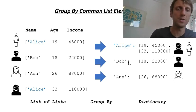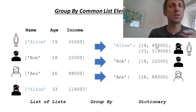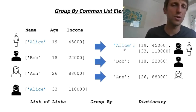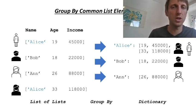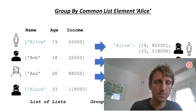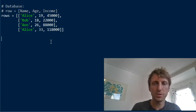This is the group by operation. We group by name Alice. An advanced step would be to aggregate — for example, calculate the average income and average age of persons named Alice. This is a common operation in databases and SQL. If you know SQL, you know the group by operation. So we want to create a dictionary that groups the different persons together.